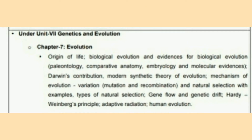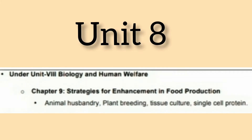Under unit eight, biology and human welfare, chapter nine — strategies for enhancement in food production — the topics of animal husbandry, plant breeding, tissue culture, and single cell protein (SCP) have been deleted by the board.